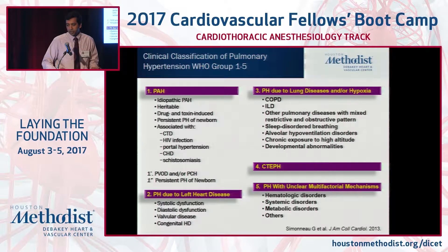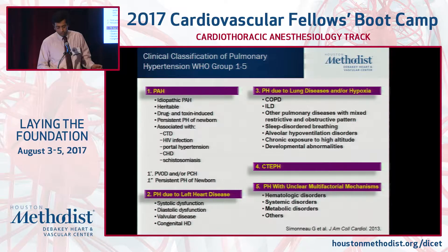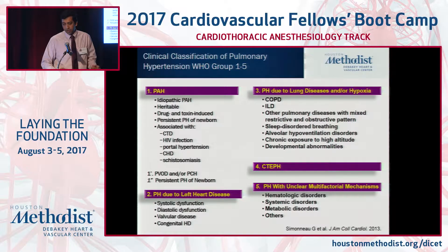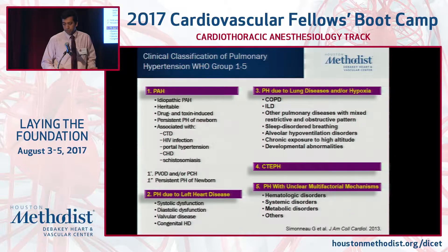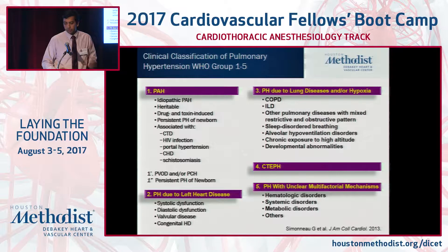The classification of PH is the WHO classification, and Group 1 is where most of the PH patients fall into. It could be due to heritable PH, drug- or anorexigen-induced PH, and PH associated with connective tissue disease, HIV, portal hypertension, and congenital heart disease — both ASD, VSD, and Eisenmenger's — and those associated with schistosomiasis.